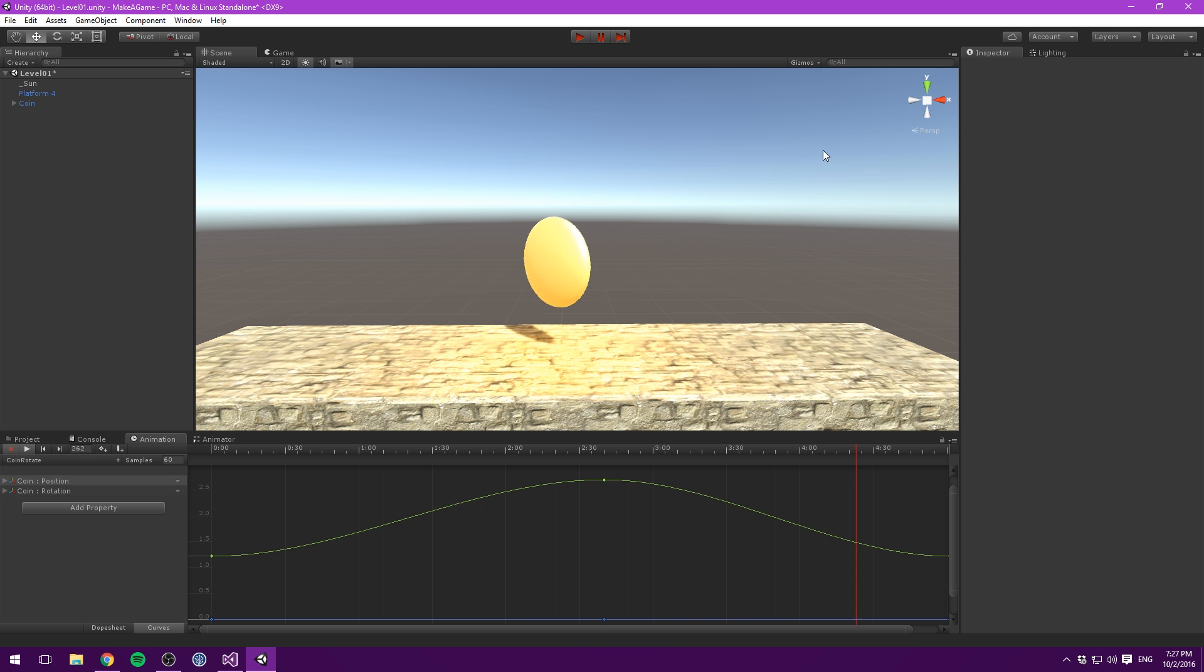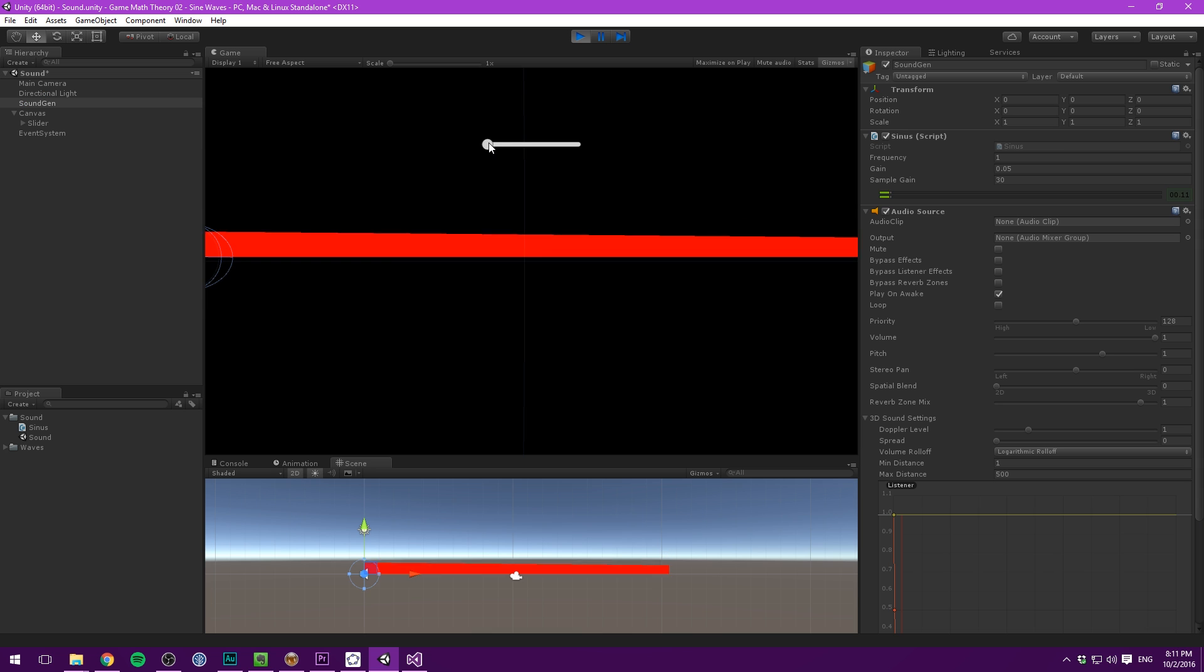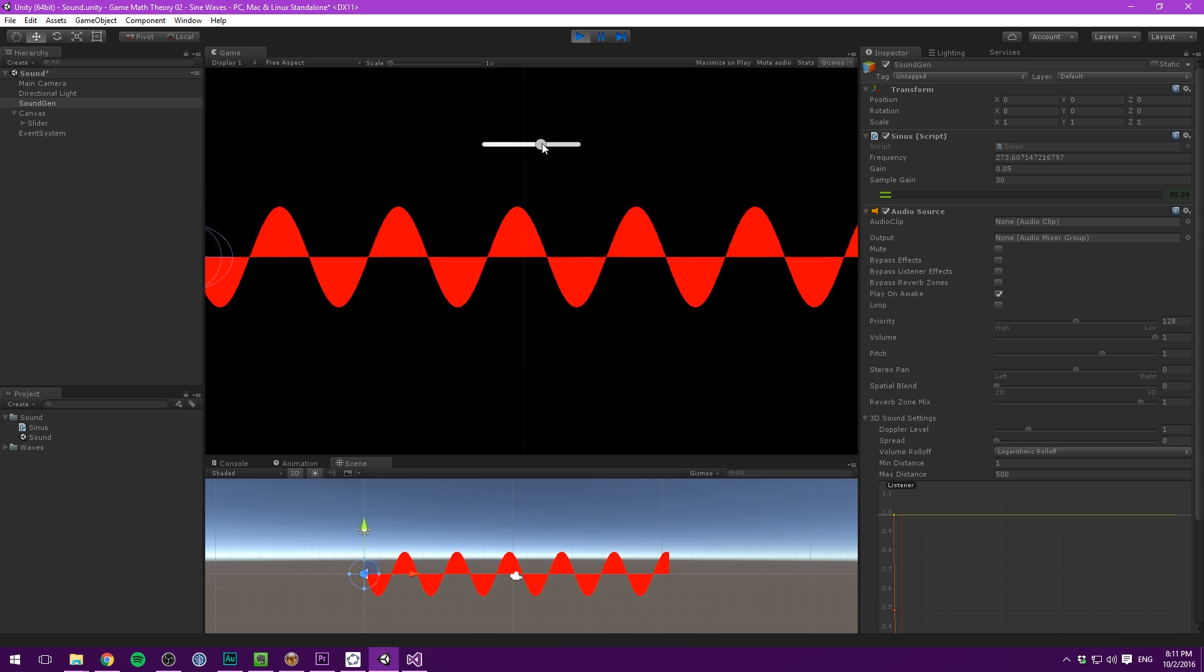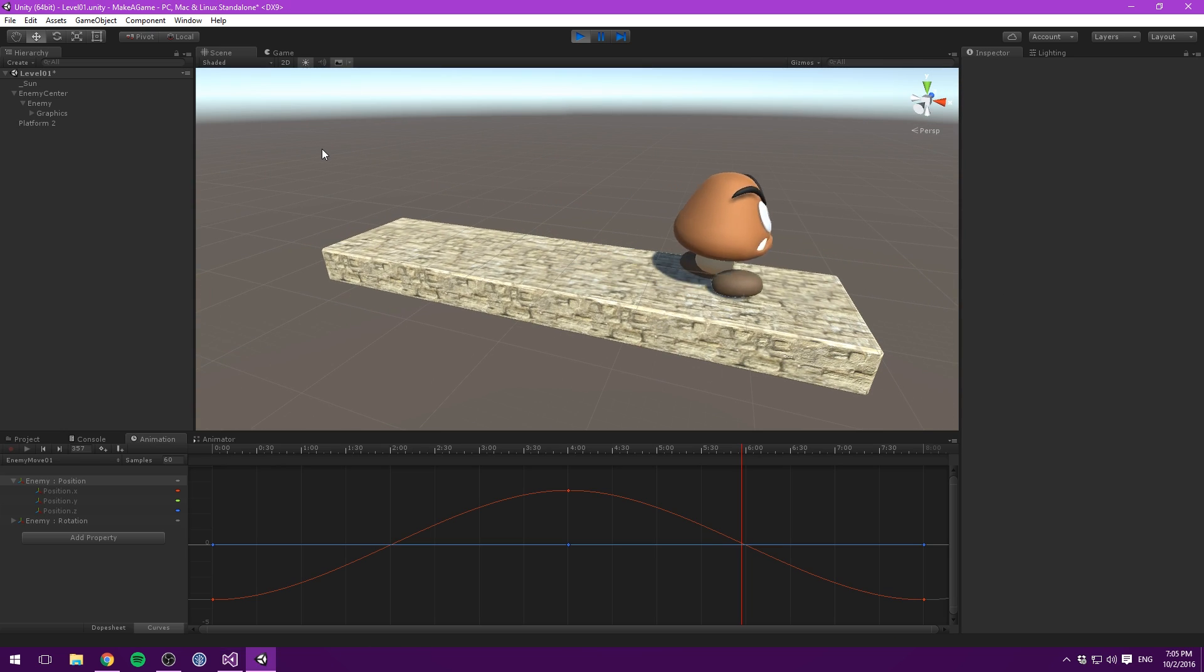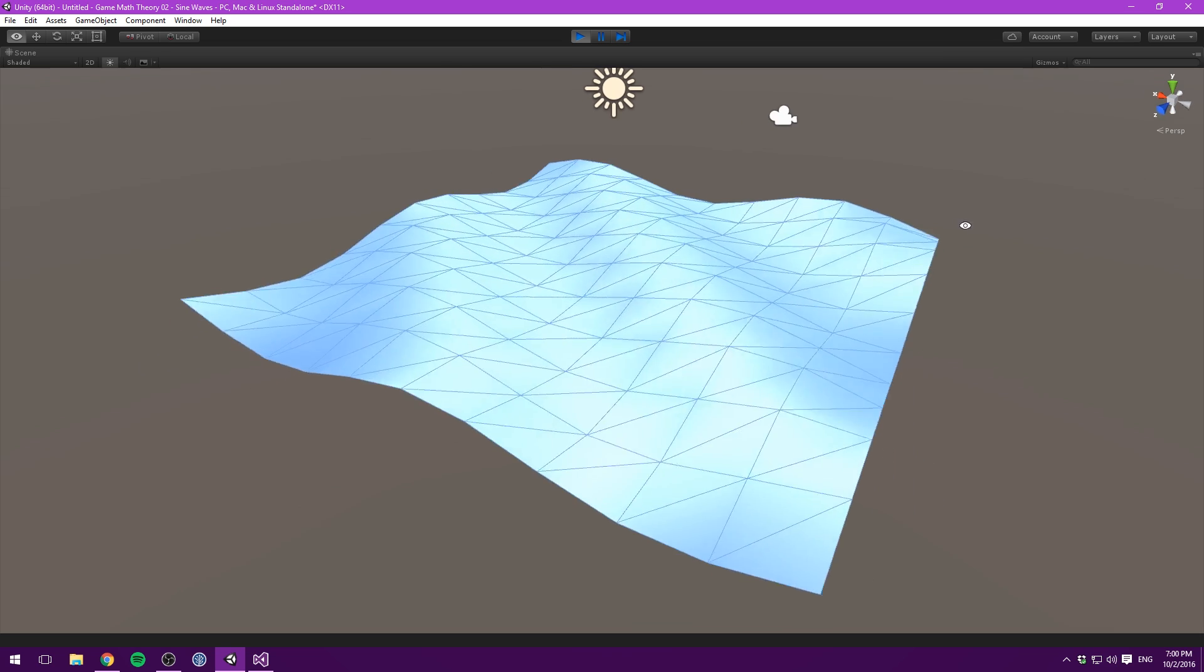Remember, the coin is just one example of where you can insert sine functions to create repeating behaviors. And hopefully this video has given you some ideas of how you can play with sine waves yourself. If you make something cool, or have any questions, make sure to share it on the Brackeys forum.